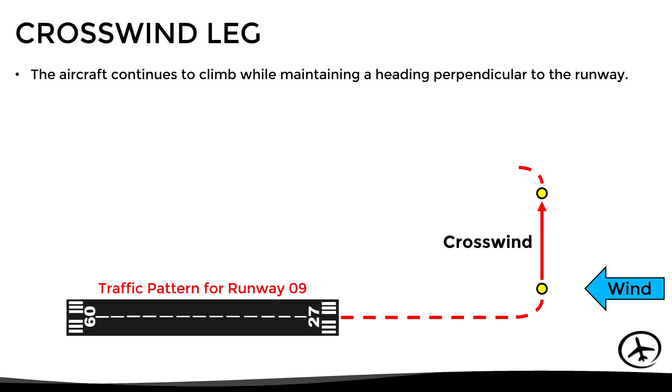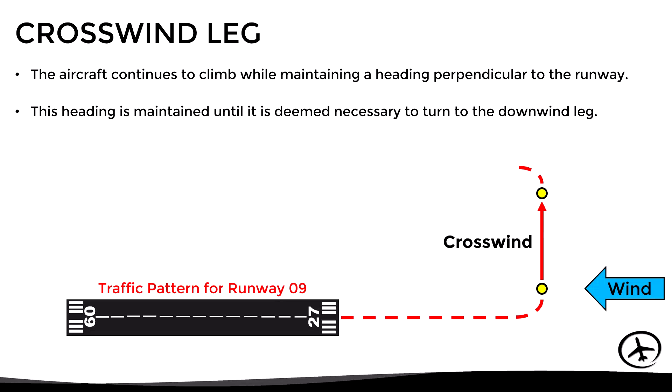Once the aircraft has reached a safe height, it starts a 90-degree turn to the crosswind leg. In this leg the aircraft continues to climb while maintaining a heading perpendicular to the runway. This heading is maintained until it is deemed necessary to turn to the downwind leg, which typically for light aircraft corresponds to a distance of approximately one nautical mile.